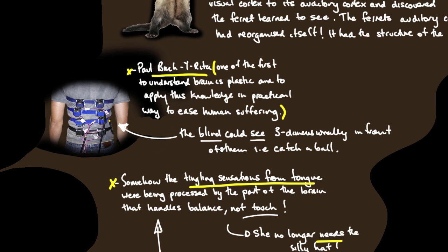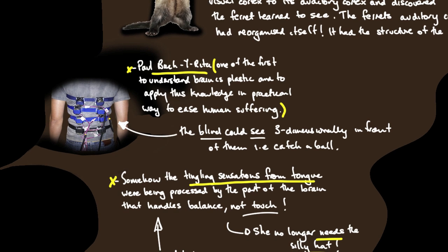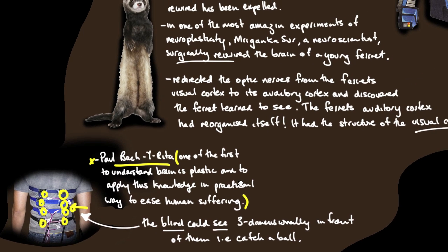He conducted a study with blind people, rigging them up with an apparatus on their back that provided feedback to project an image onto their back that they were seeing in front of them. The blind people could actually see three-dimensionally in front of them. If you threw a ball, they could catch it based on the feedback coming through on the back. That sounds incredible, and a lot of these things are going to sound incredible.